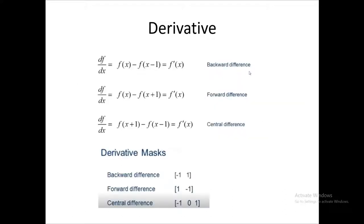We can also take the backward difference, where we take the difference between the current pixel f(x) and the previous or preceding one. There is also another type called the central difference, where we take the difference between the previous and next pixel, excluding the current pixel. These can be implemented with derivative masks: the backward difference mask is [-1, 1], the forward difference is [1, -1], and the central difference is [-1, 0, 1].